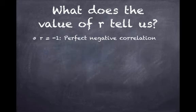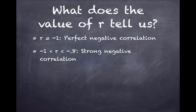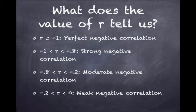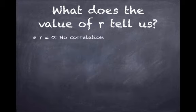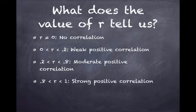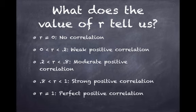Here is a summary: negative 1 is a perfect negative correlation. From negative 1 to negative 0.8 is strong negative. Negative 0.8 to negative 0.2 is moderate negative. Negative 0.2 to 0 is weak negative. r equals 0 is no correlation. Then on the positive side: 0 to 0.2 is weak positive, 0.2 to 0.8 is moderate positive, 0.8 to 1 is strong positive, and 1 is a perfect positive.